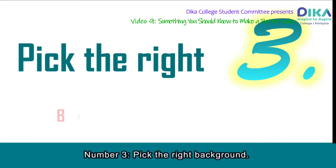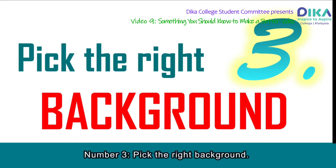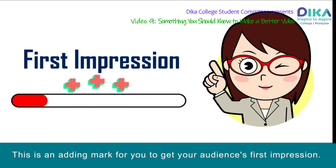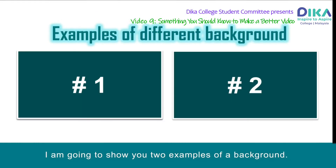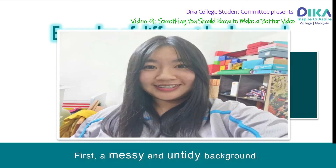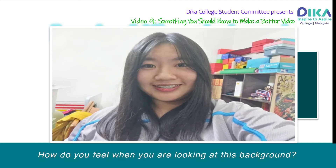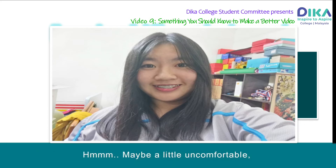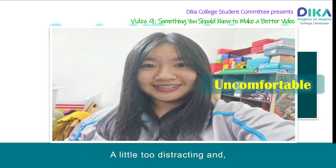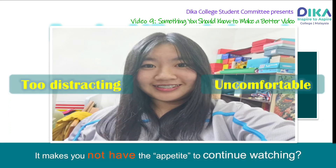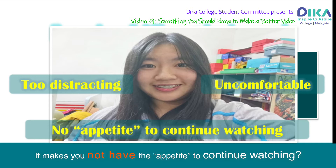Number 3: Pick the right background. This is an important factor for getting your audience's first impression. I'm going to show you two examples of a background. First, a messy and untidy background — it may feel a little uncomfortable, a little too distracting, and it makes you not have the appetite to continue watching.